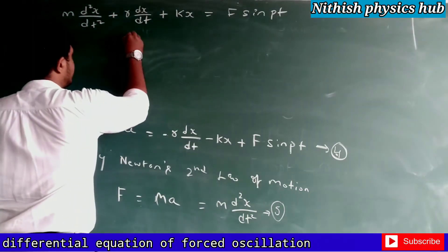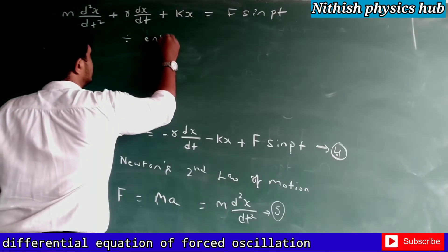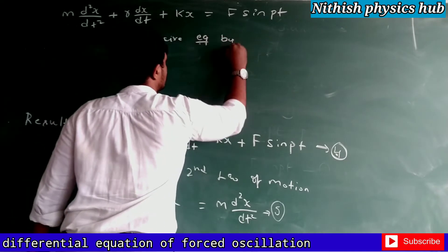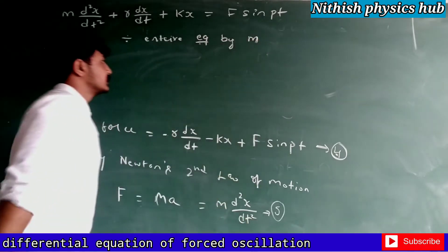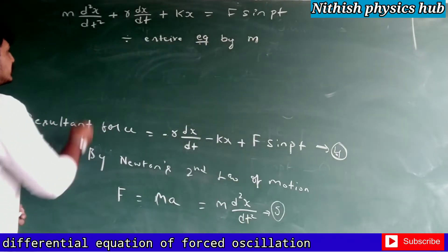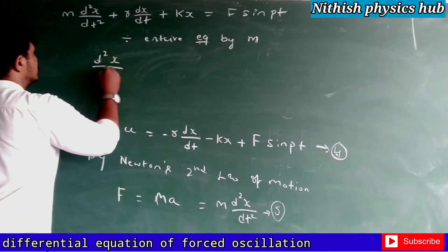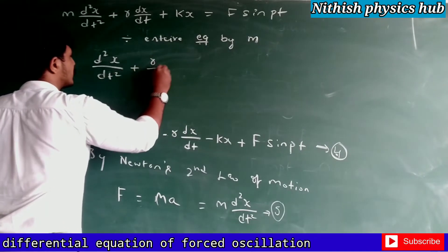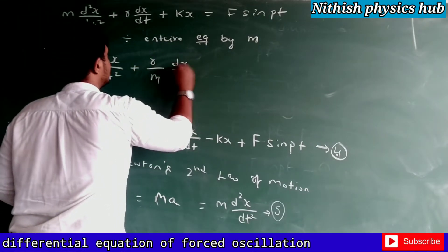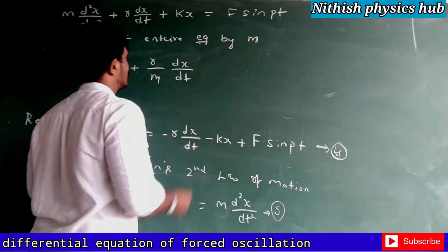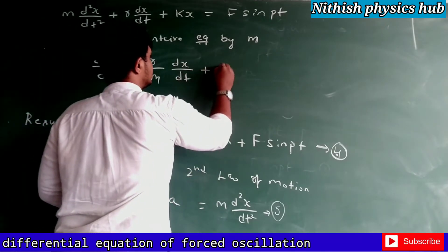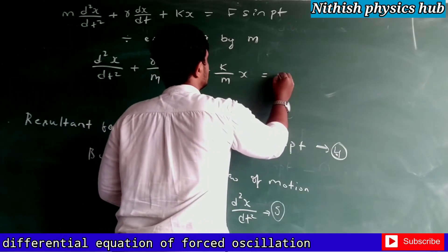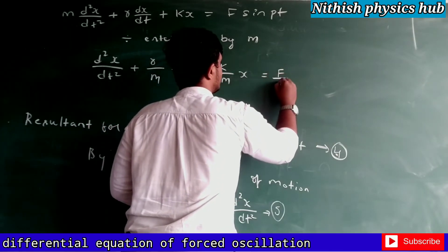So what I need to do, I will divide the entire equation by mass. So the equation turns out: d²x by dt² plus r by m dx by dt plus k by m into x, which is equal to f by m sin pt.